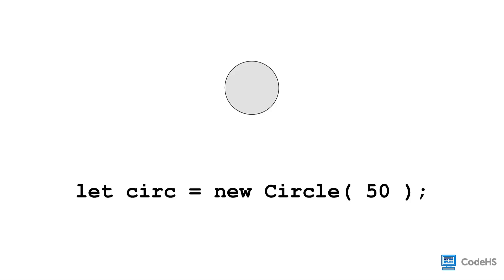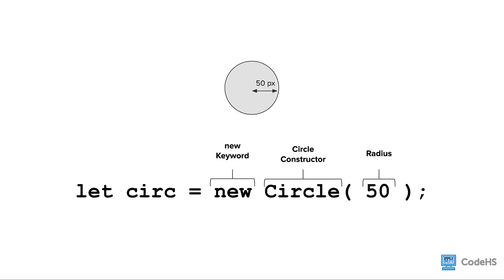Let's try adding a circle to the canvas. First, we need to create a circle. To create a circle, we write the new keyword, the circle constructor, which is Circle with a capital C, followed by parentheses. Between the parentheses, we pass the dimensions of the shape. For a circle, we pass one value, which is the radius of the circle. And to be able to refer to the circle, we will store it in a variable.